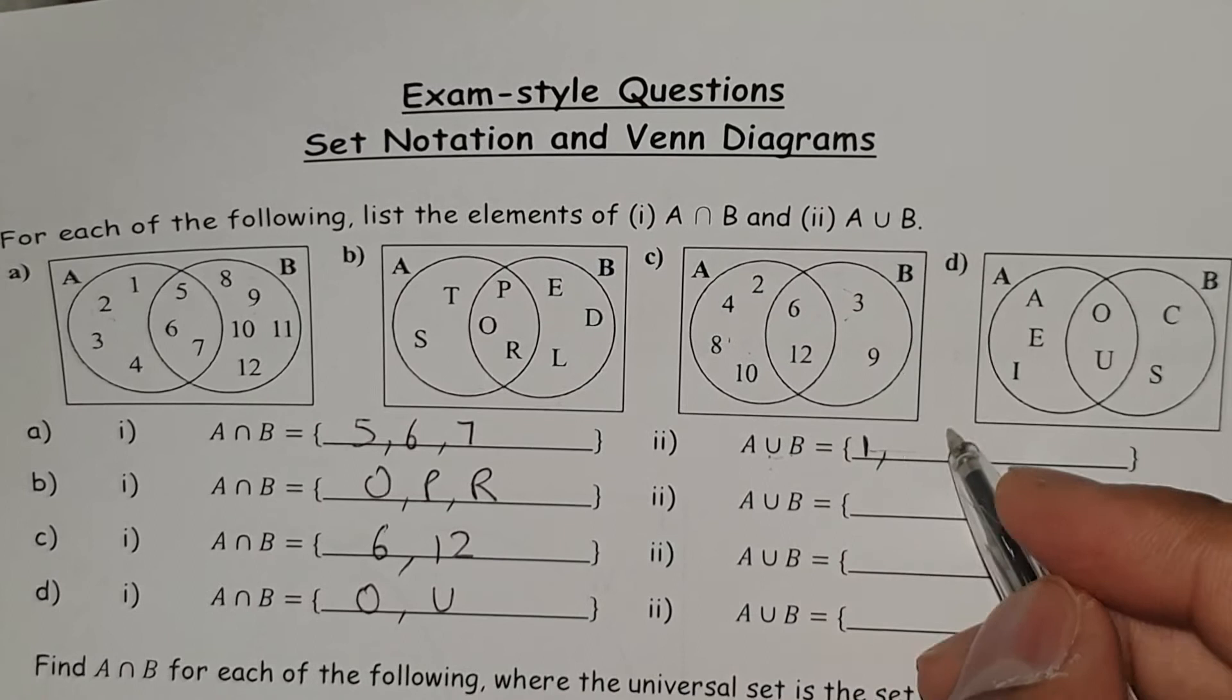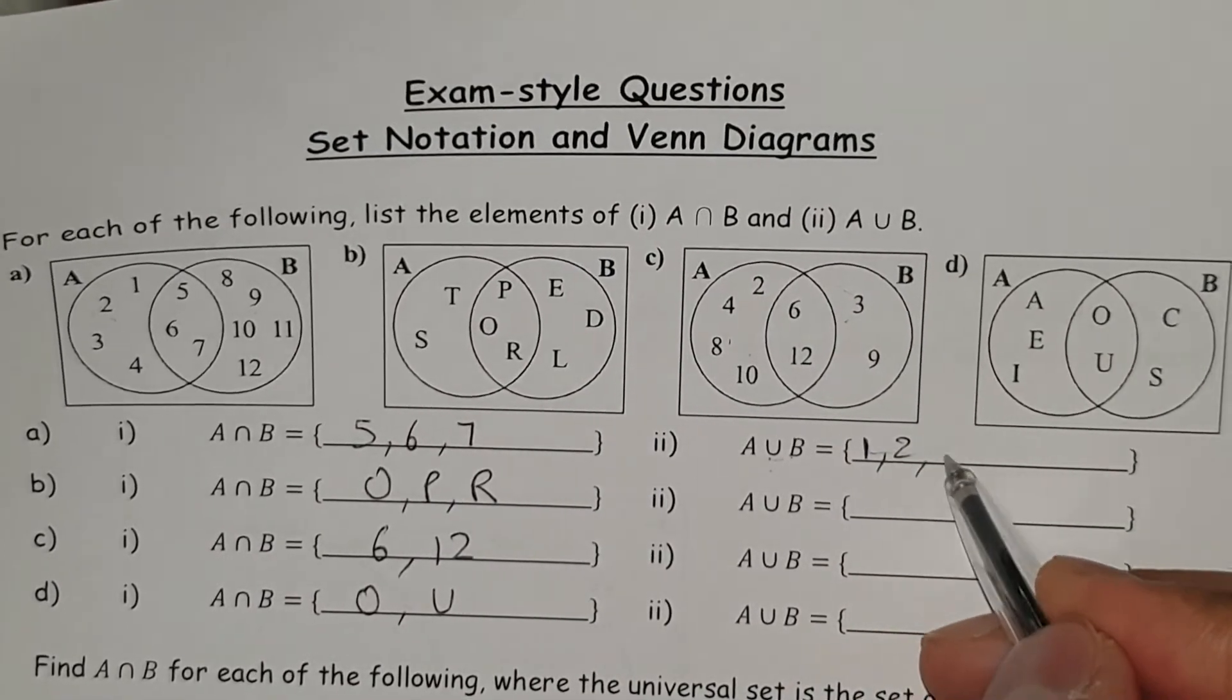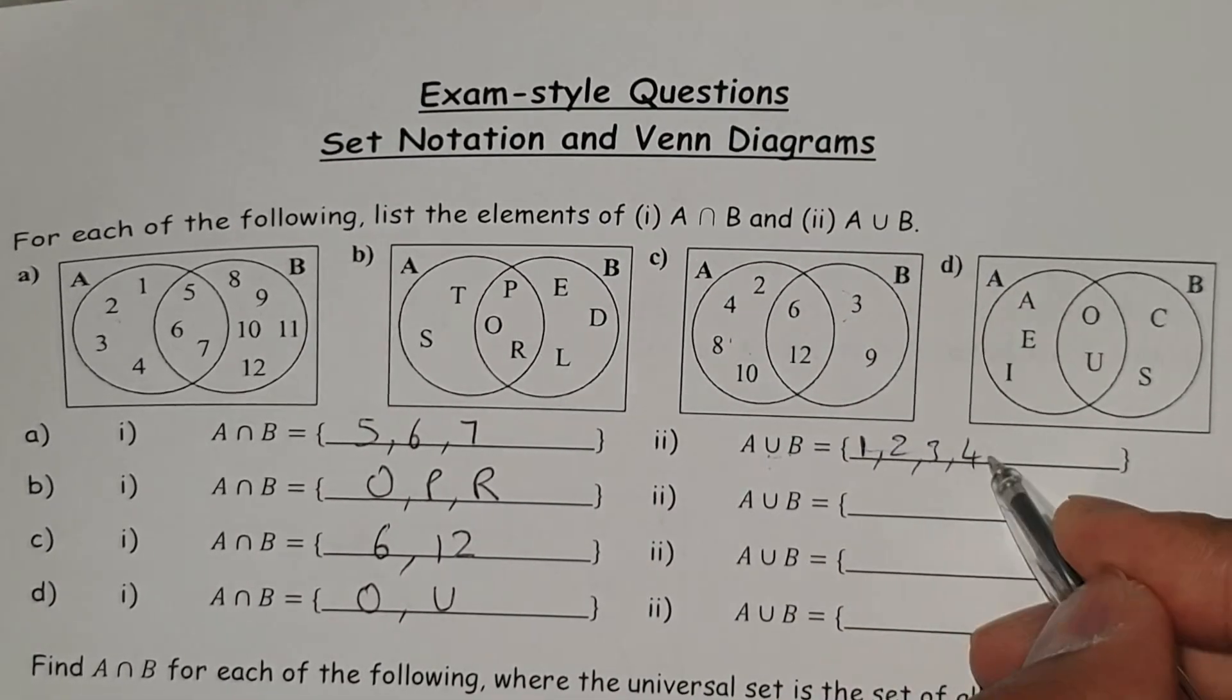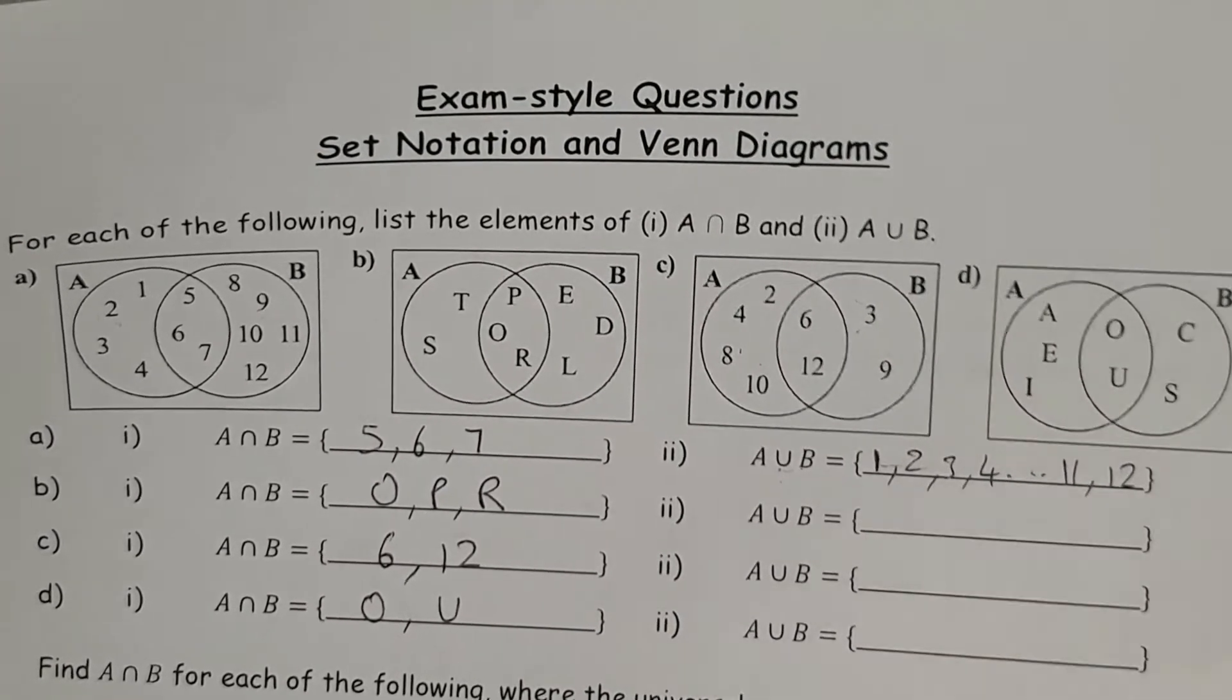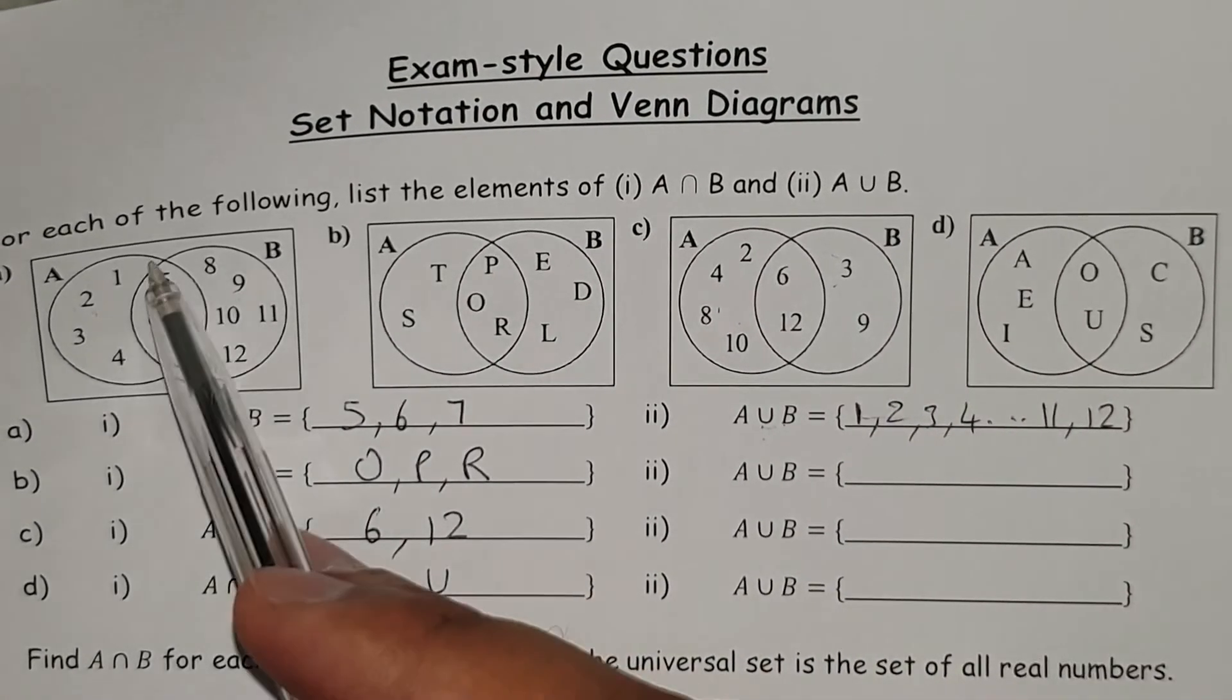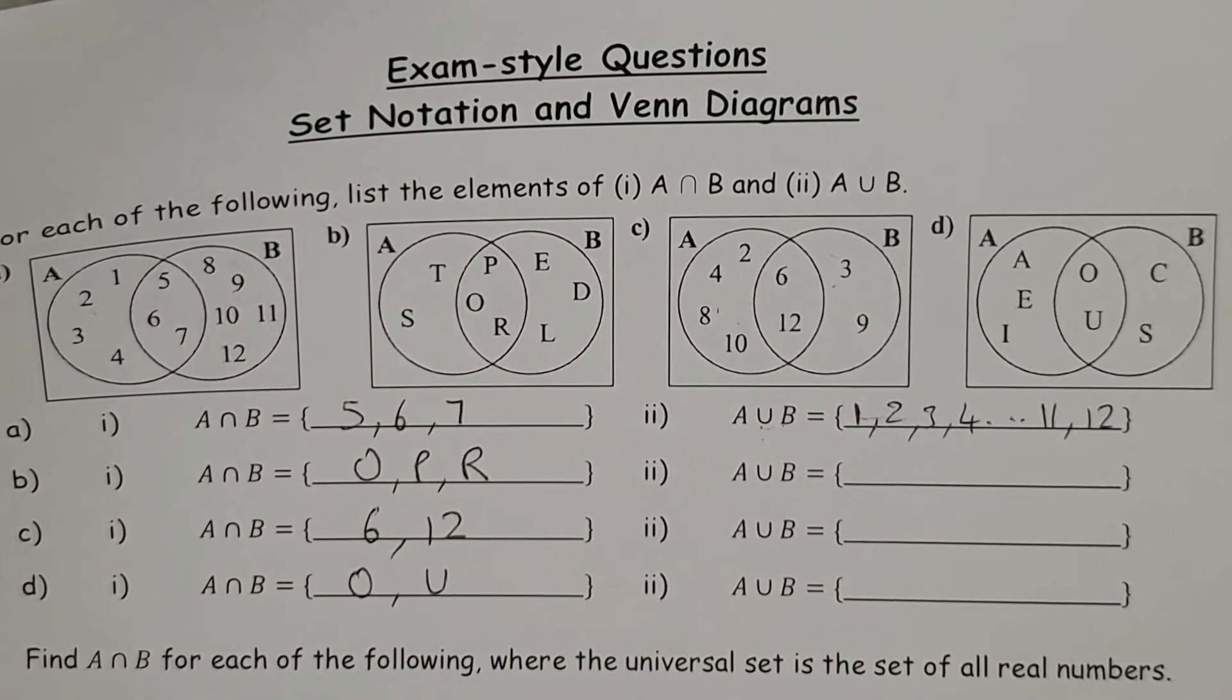So it's going to be the numbers 1, 2, 3, 4 and it keeps going all the way up to 11 and 12. I'm not going to write them all down but it's basically all of the numbers in both A and B.